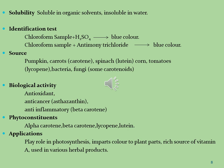Common sources of carotenoids are pumpkin, carrots, spinach, corn, tomatoes, bacteria, and fungi. Some phytoconstituents with biological activities—antioxidant, anti-cancer, and anti-inflammatory—include alpha-carotene, beta-carotene, lycopene, and lutein. Carotenoids play an important role in biosynthesis, impart color to plants, are a rich source of vitamin A, and are used in various herbal products.